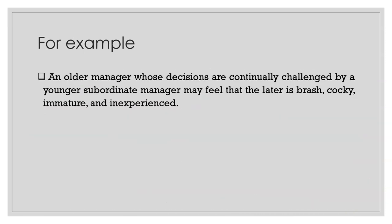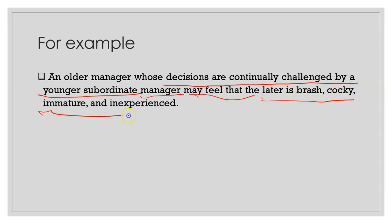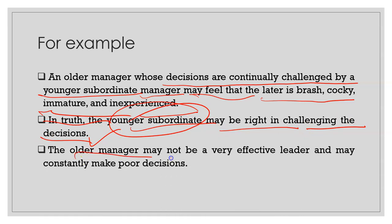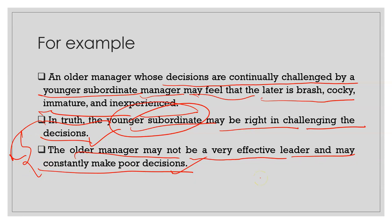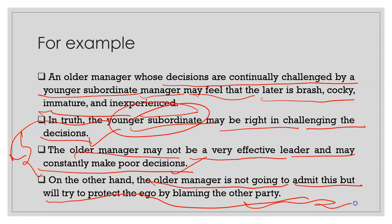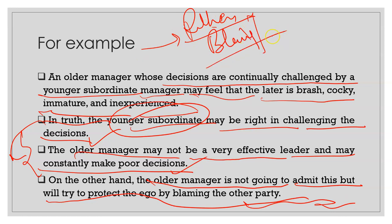For example, an older manager whose decisions are continuously challenged by a younger subordinate manager may feel that the younger person is brash, cocky, immature, and inexperienced. In truth, the younger subordinate may be right in challenging the decision — the older manager may not be a very effective leader and may constantly make poor decisions. But the older manager will not admit this and will try to protect his ego by blaming the other party rather than accepting his errors.